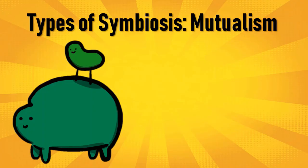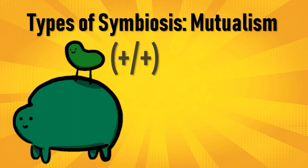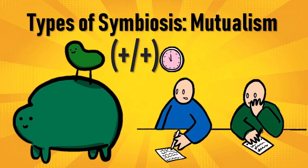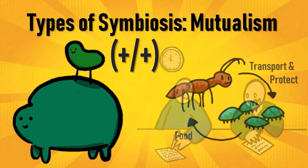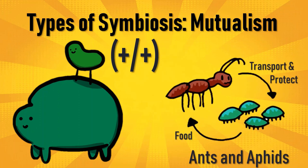Mutualism is a type of symbiotic relationship wherein both the species benefit from each other. Just like you and your friend helping each other for an exam, except for the fact that you two belong to the same species. A good example of mutualism is that of ants and aphids, who support each other.